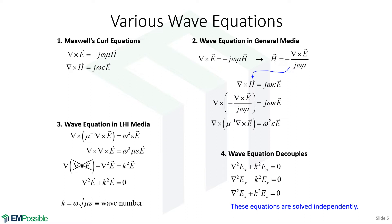Another interesting thing that happens when the medium is homogeneous and isotropic is that our single vector wave equation separates into three independent equations that need to be solved independently. They're all the same equation, so if we solve for the general solution of one, we can reuse it for the others. But they are independent equations in homogeneous isotropic media, and that's going to lead to a lot of simplifications.